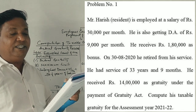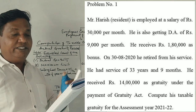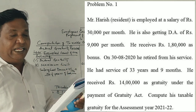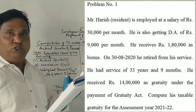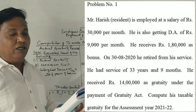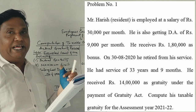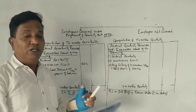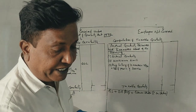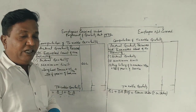On 30th August 2020, he retired from his service and he had service of 33 years and 9 months. He received 14,00,000 as gratuity under the Payment of Gratuity Act. Compute his taxable gratuity for the Assessment Year 2021-22.